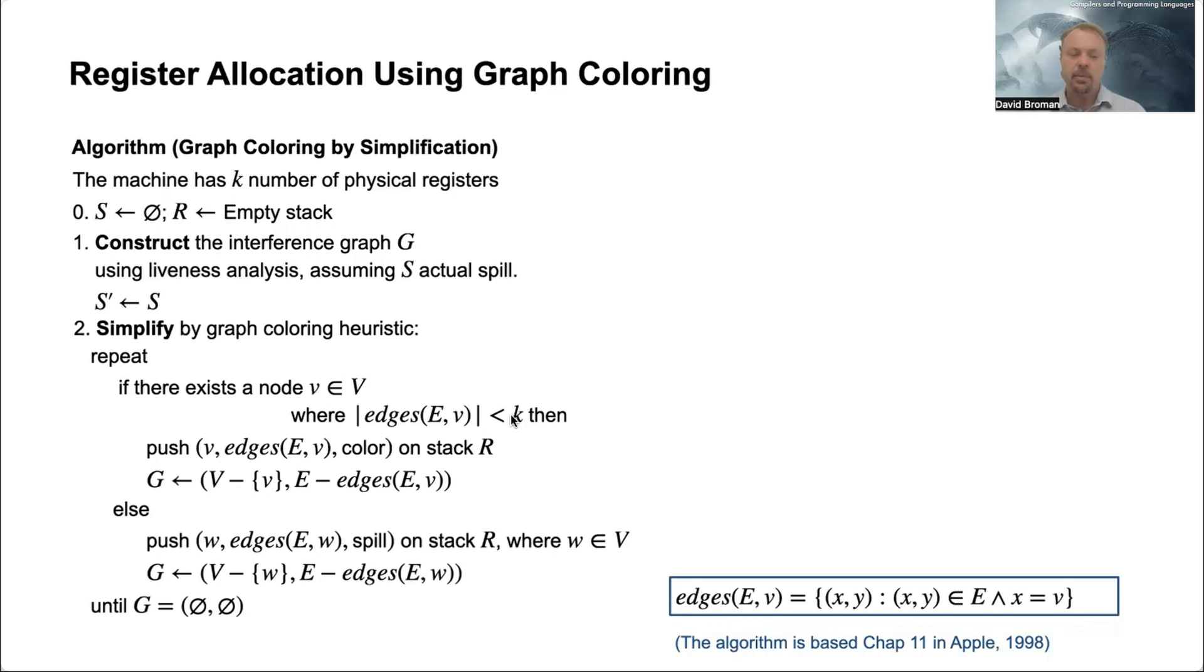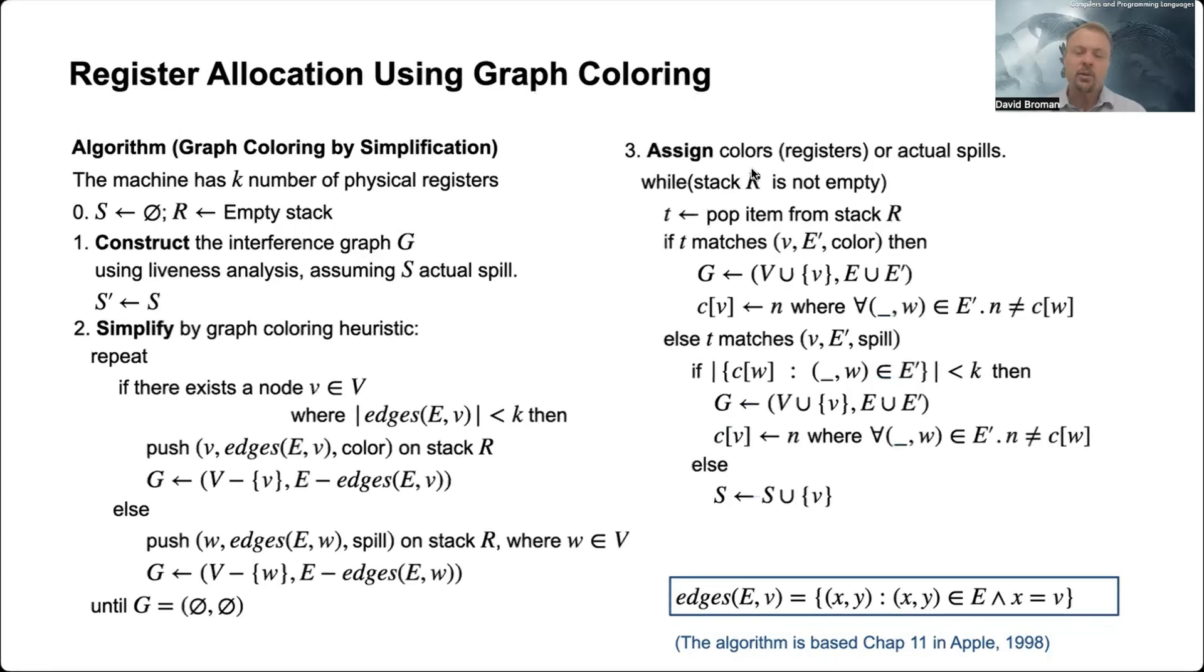And then in step three, we will do the actual register allocation by popping from this stack. So we're popping over and over again from the stack and then reconstructing the graph, and at the same time also giving colors to the nodes.